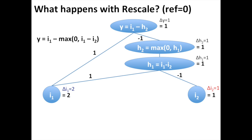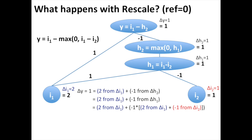What happens when we try to assign contributions to the delta y? The 1 of delta y is composed of a 2 coming directly from delta i1 and a negative 1 coming directly from delta h2. The full contribution of delta h2 gets inherited by delta h1, and delta h1 gets split up into a 2 coming from delta i1 and a negative 1 coming from delta i2. Adding it all together, we get a net contribution of 0 from delta i1 and 1 from delta i2.